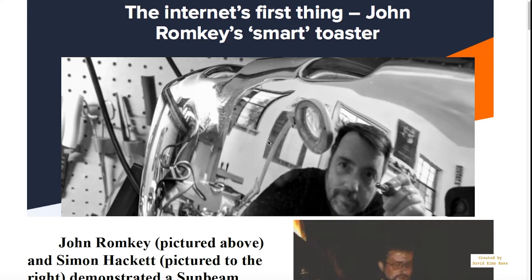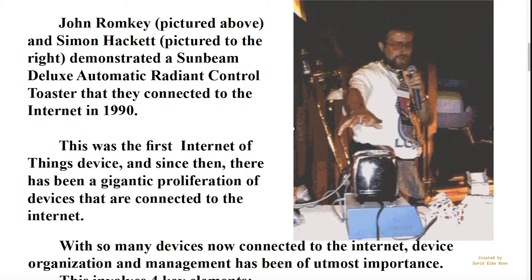So far, we've been talking about the Internet of Things. But the Internet's first thing was developed by both John Romkey and Simon Hackett, and it was an Internet-controlled toaster. This toaster was a Sunbeam, and it was connected to the Internet in 1990. Since then, there has been a gigantic proliferation of devices that are being connected to the Internet every day.